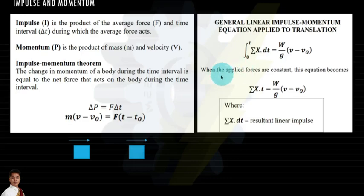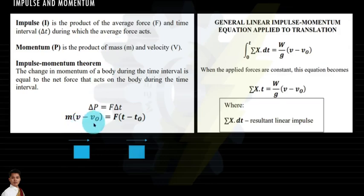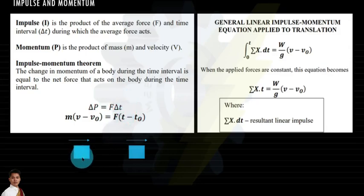For this topic we are going to use the impulse-momentum theorem: delta p is the change in momentum. From the definition of momentum, we can express delta p as m multiplied by the quantity (v minus v-sub-o), and then F multiplied by delta t, written as F multiplied by (t minus t-sub-o).